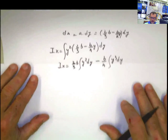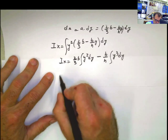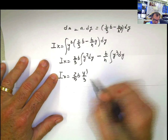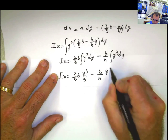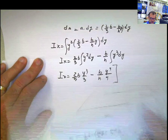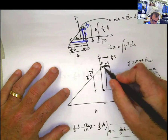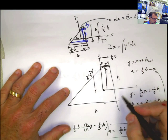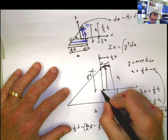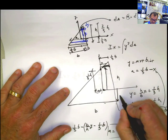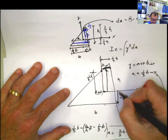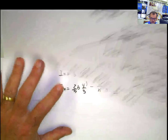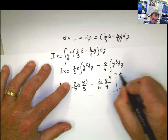Continuing to solve the integral: I sub x = 2/3 B · (y³/3) − B/H · (y⁴/4). Now we need the limits of integration. Measuring y from the centroidal axis, the lower bound is negative 1/3 of H (below the axis) and the upper bound is positive 2/3 of H. Those are the two limits — from −H/3 to +2H/3.